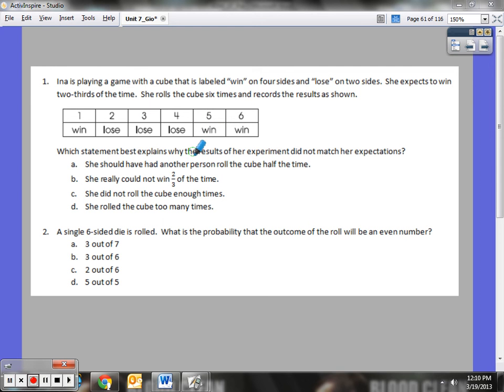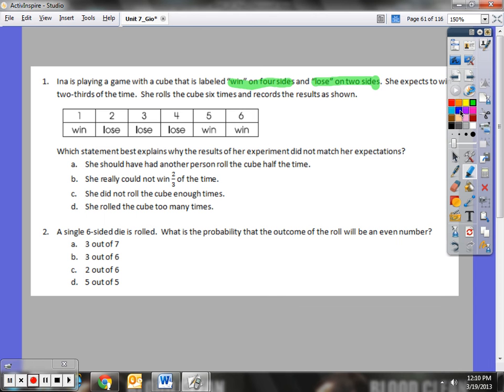Which statement best explains why the results of her experiment did not match her expectations? So let's go back because I'm not quite sure what her expectations were again. Ina is playing a game that is labeled win on four sides and lose on two sides. So that means altogether there are six sides. So she must be a six-sided cube because four wins on one side and then two on the other. So four plus two gives me six.